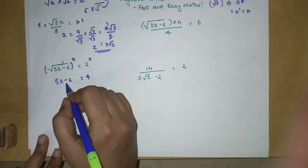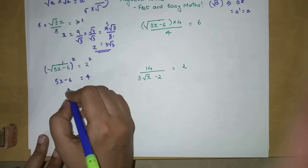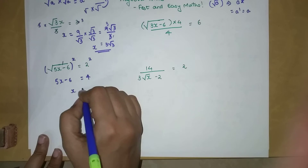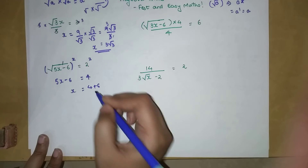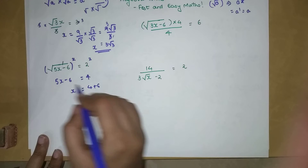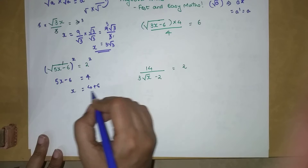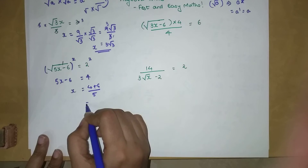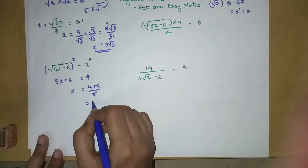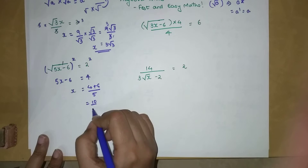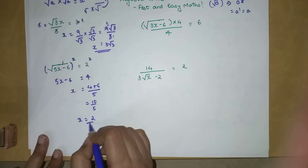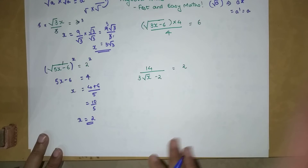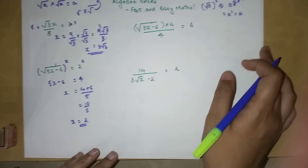Shifting the 6 to the other side: 4 + 6 = 10, and since 5 is multiplied by x, we divide by 5: x = 10 / 5 = 2.